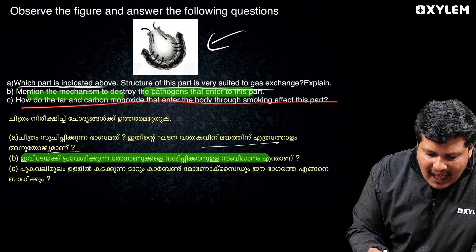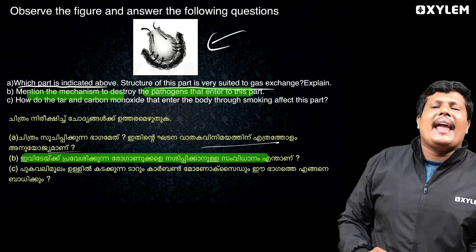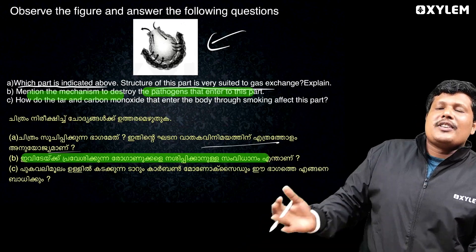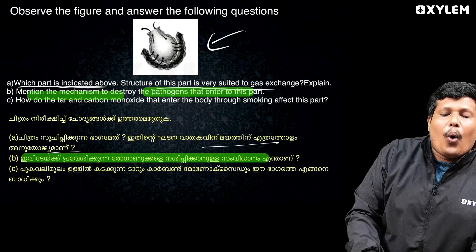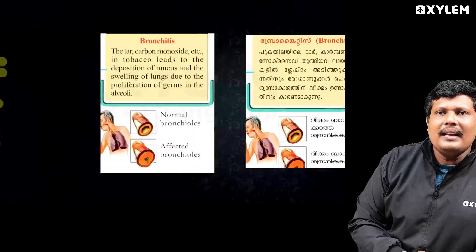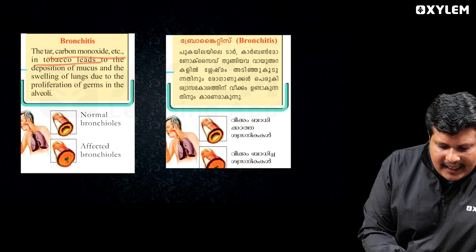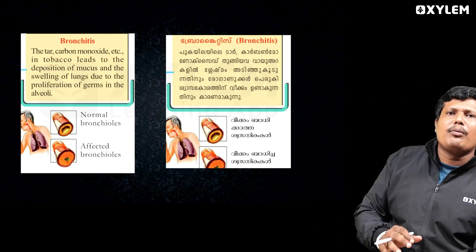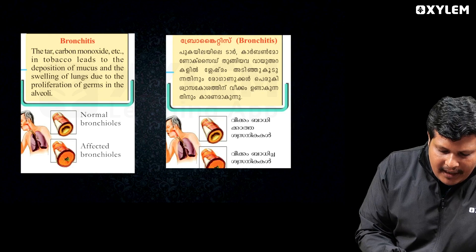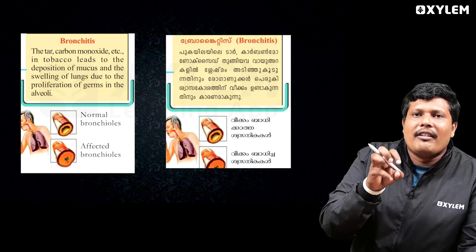How do tar and carbon monoxide enter the body through smoking and affect this spot? Tar and carbon monoxide lead to deposition of mucus and swelling of the lining due to proliferation of germs in the alveoli.